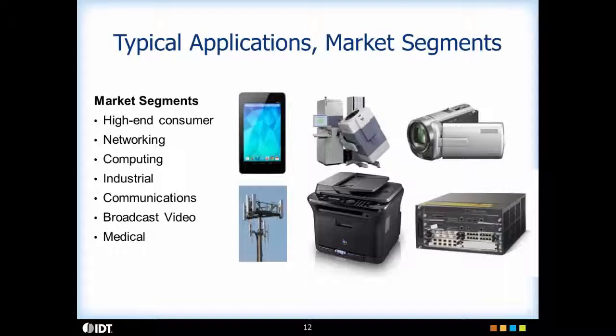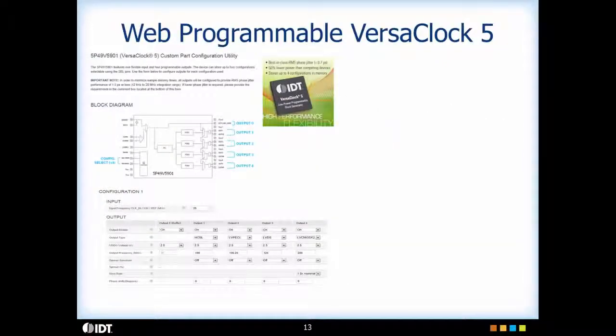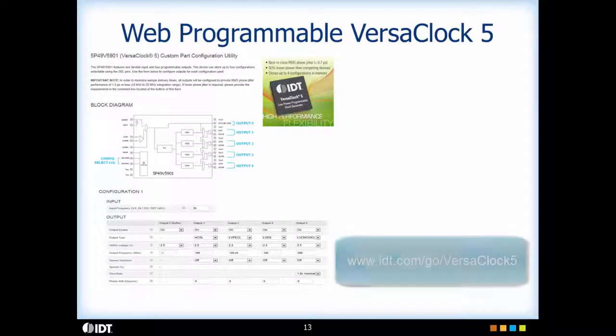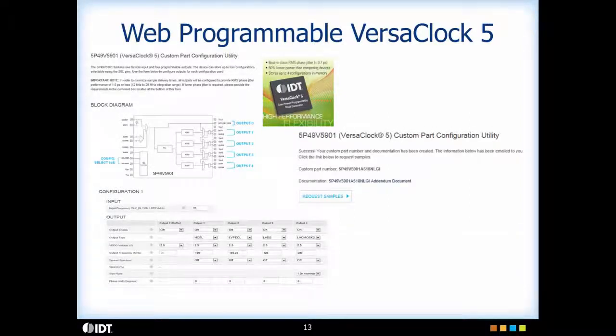They have the same footprint and are compatible with each other. Some of the typical applications for VersaClock 5 family are high-end consumer, networking, computing, industrial, communications, broadcast video and medical applications. For the VersaClock 5, we have also given our customers a web tool which enables them to get pre-programmed samples. If you go to the VersaClock 5 IDT home page and click on the customize link, you will get a utility where you can enter the input frequency, output frequency, output type and instantaneously get a part number, a datasheet addendum, and the ability to request samples with your configuration.